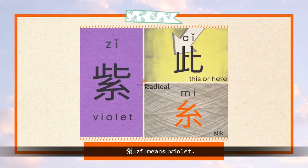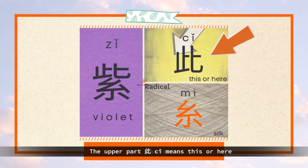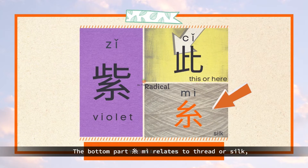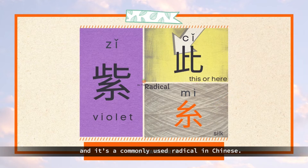Zi means violet. The upper part, ci, means 'this' or 'here' — it's the phonetic of zi. The bottom part, mi, relates to thread or silk. It's a commonly used radical in Chinese.